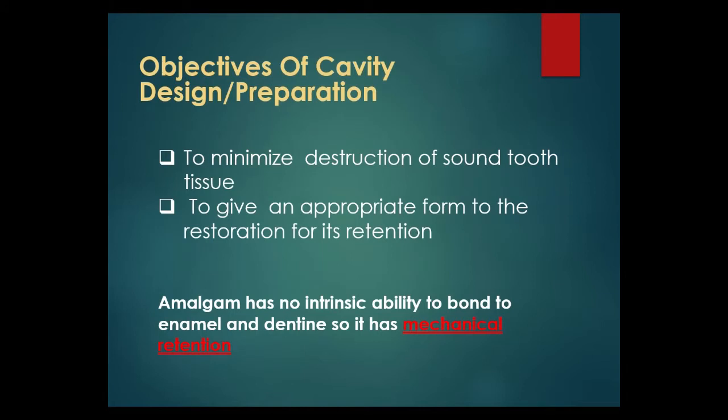Objectives of cavity design or preparation are to minimize destruction of sound tooth tissue and to give an appropriate form to the restoration for its retention. Amalgam has no intrinsic ability to bond to enamel and dentine, so it has mechanical retention, whereas other restorations like composite or GIC have micro-mechanical or chemical retention.